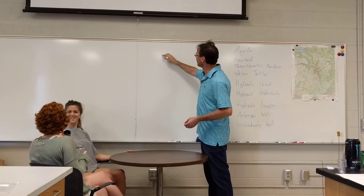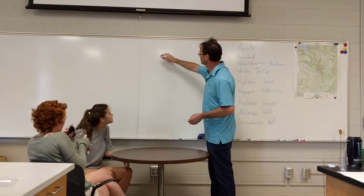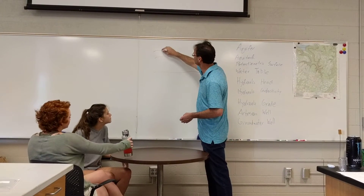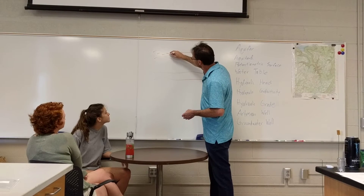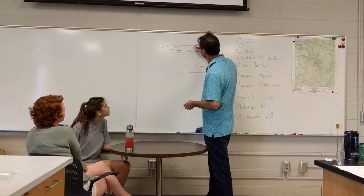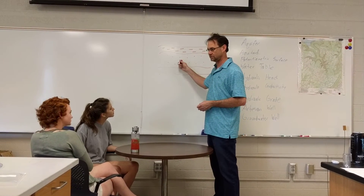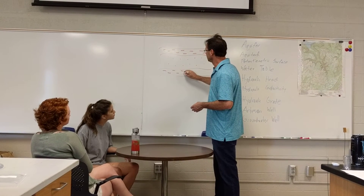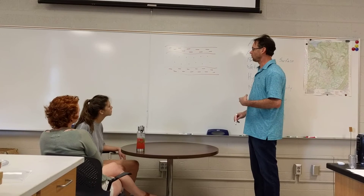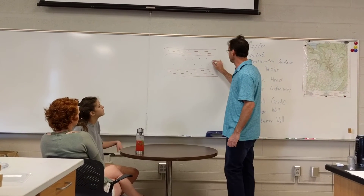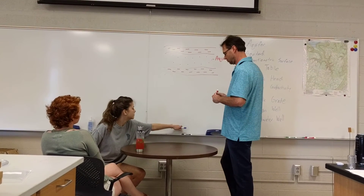So if we draw a picture with a couple of layers of different material: this one up here is a shale — the dashes mean it's fine-grained. This material in the middle is a sandstone — the dots mean it's sand. And this material down here is another shale. Which one of these three would be the aquifer? The middle — that's right. Aquifer.